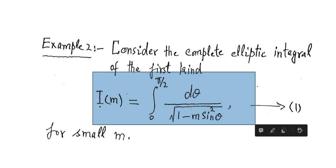The integral I(m) is given from 0 to π/2 of dθ over the square root of (1 − m sin²θ). For small m (epsilon), we are asked to find the asymptotic expansion of this integral with the help of the expansion of integrand method.